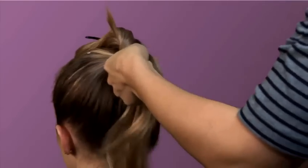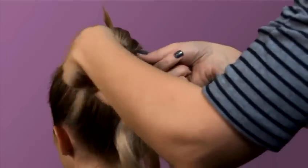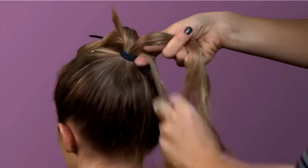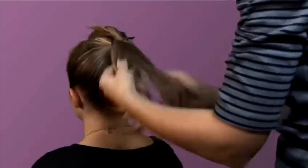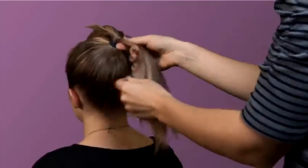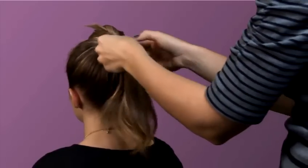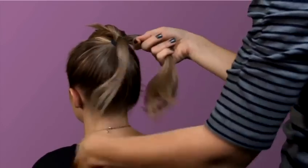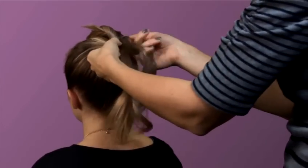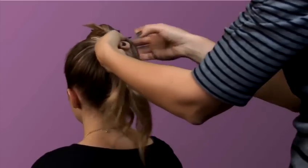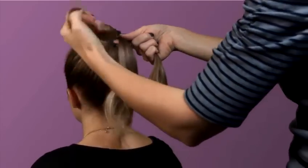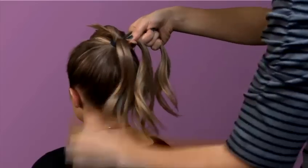Make sure all the sections are clean before you start. Take a section from underneath the ponytail. Divide the section into three. Make sure each one is clean so your work is smoother.